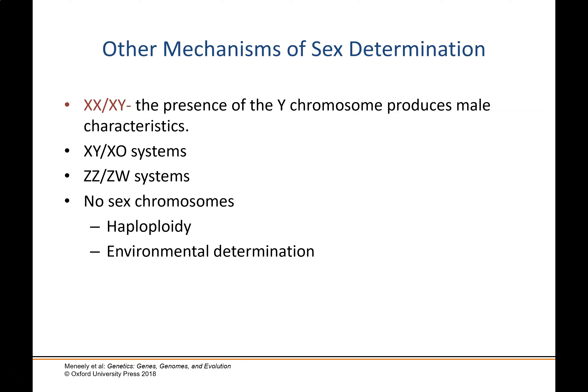The XX/XY system is not the only mechanism of sex determination. In fact, there are several other systems that produce sexually dimorphic individuals. In humans and many other mammals, XX makes females and XY produces males, and the presence of that Y chromosome is really what's important for giving the individual their male characteristics.